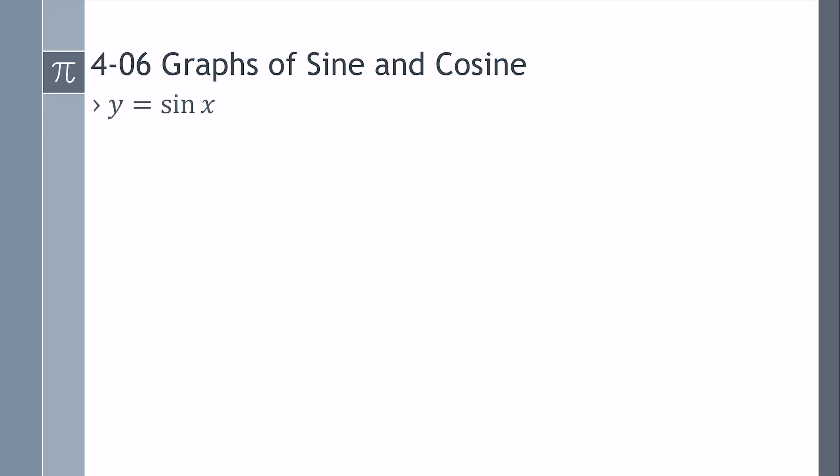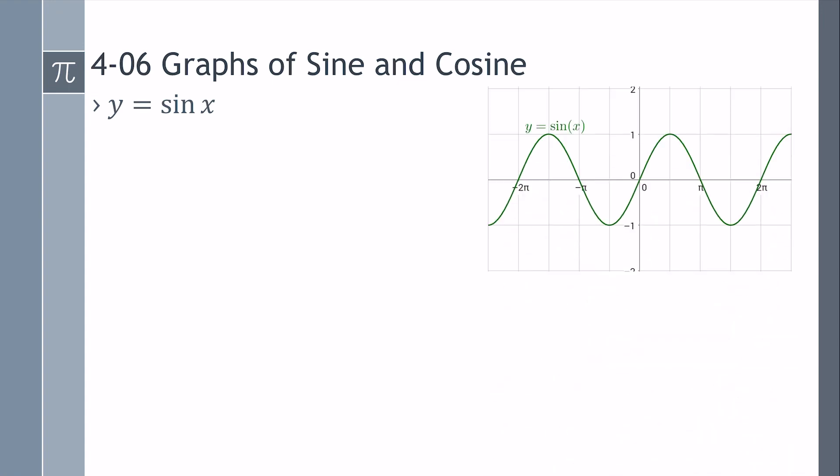If we have y equals sine x, where x is our angle, we get a graph that looks like this. Notice it goes up and down and keeps repeating. So we call that periodic, because it repeats.